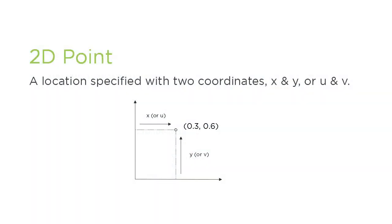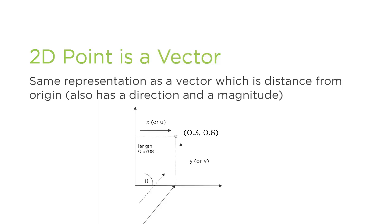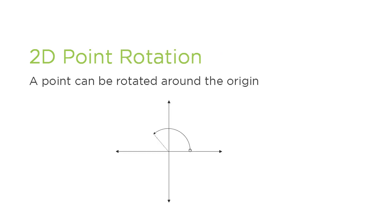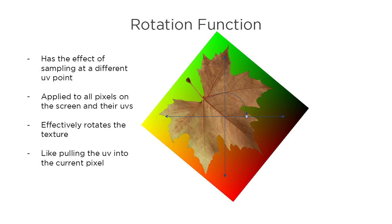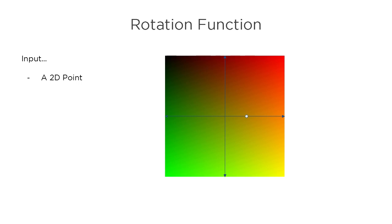We are defining a 2D point which is anywhere on the XY plane — this is the same as the UVs, just with different names for the two components. We want to take any point with arbitrary coordinates and rotate them around another point at an angle that we specify. This will have the effect of our texture being sampled at a different point and look as if the texture has been rotated. This operation takes as input: a 2D point to transform, a 2D pivot point to rotate around, and an angle. The output will be the location of the rotated point.